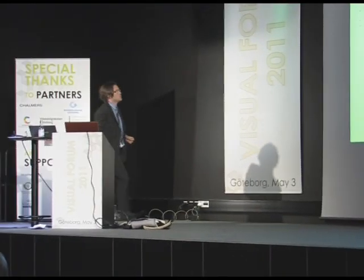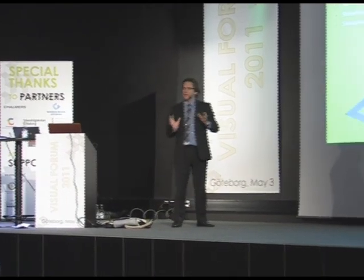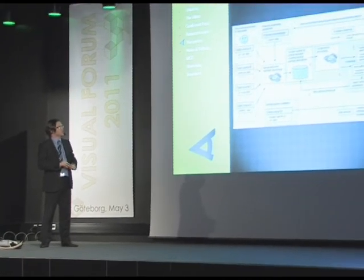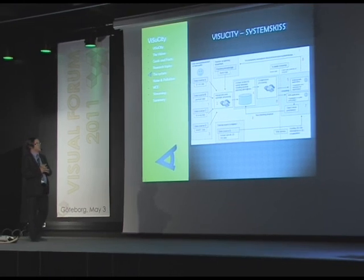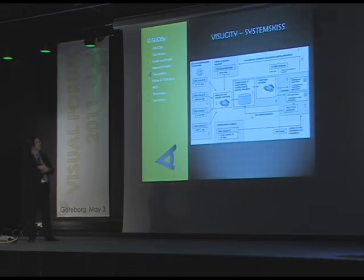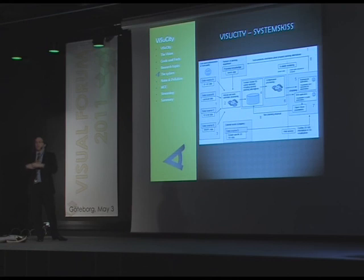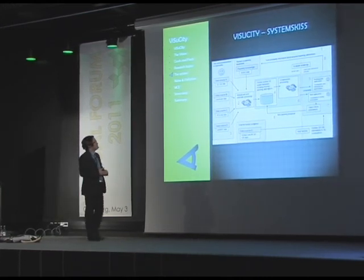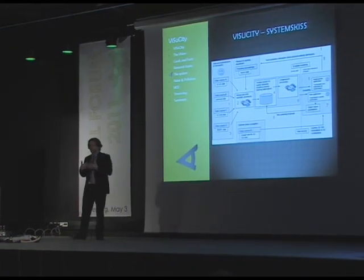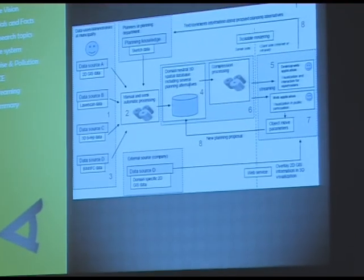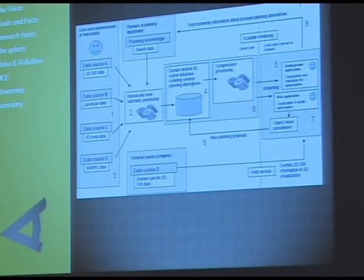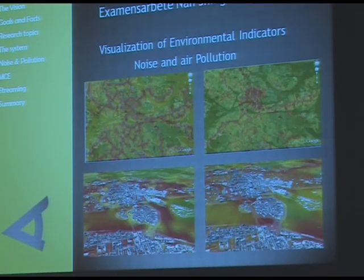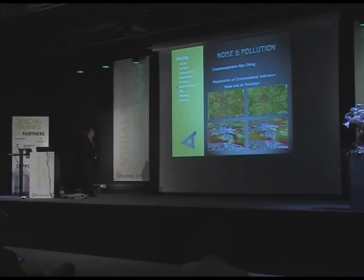En systemskiss: i vänsterkanten är det indata i olika former som man behöver processa. I mitten pratade vi om en generell, generisk 3D-databas som ska rymma all information, för att man ska kunna komma åt den oavsett var man sitter — ha ett original och en gemensam källa. Den visade sig vara väldigt utmanande att realisera, så den har vi lagt på framtiden. I gränssnittet är det själva applikationen som någon använder på sin dator, eller en webbsida där man laddar ner ett litet paket och kan titta på visualiseringen.